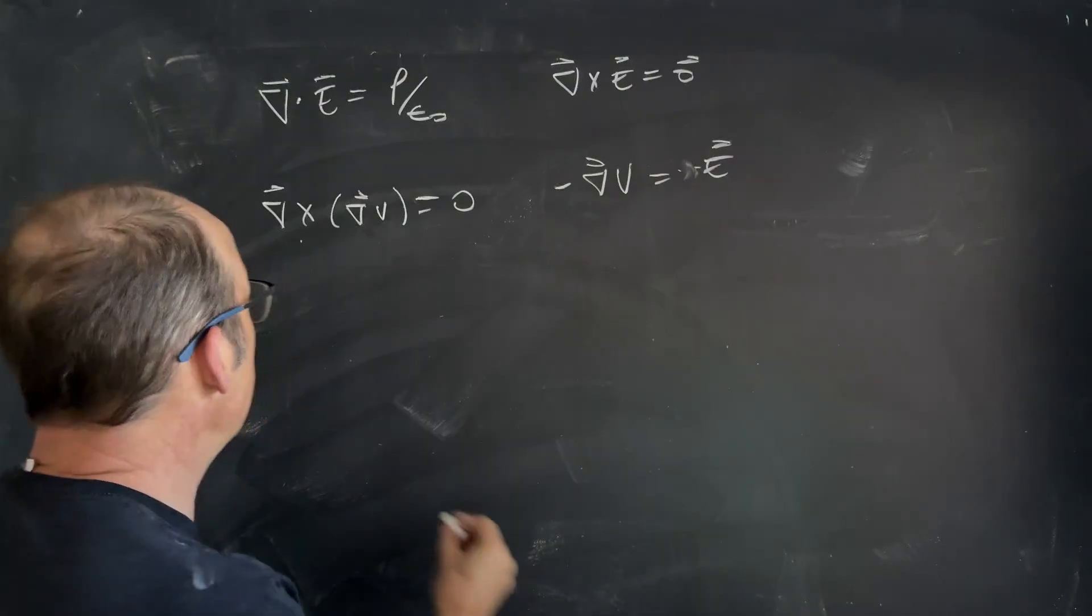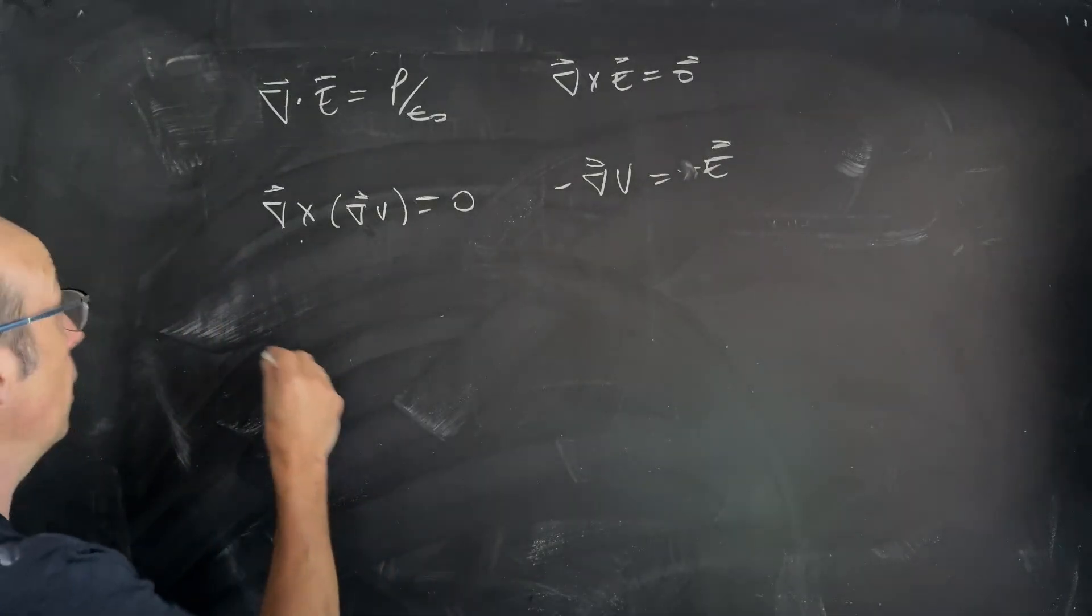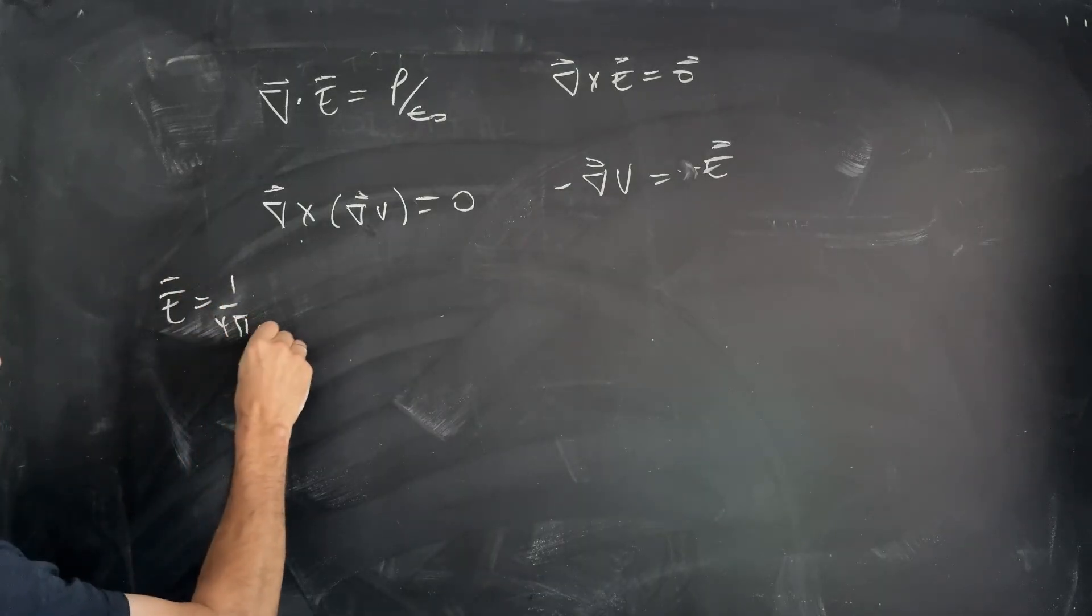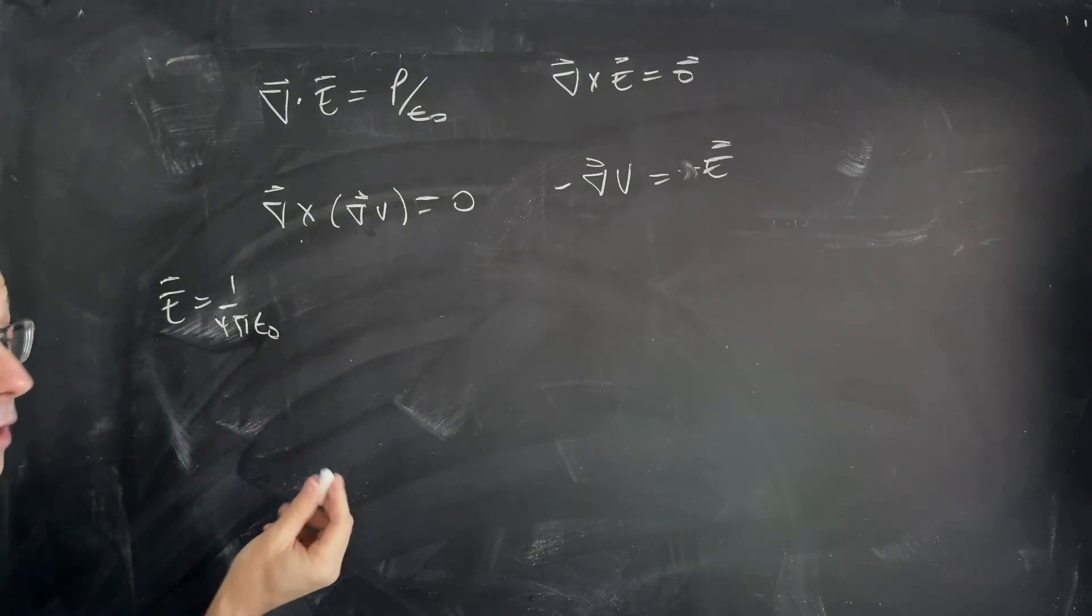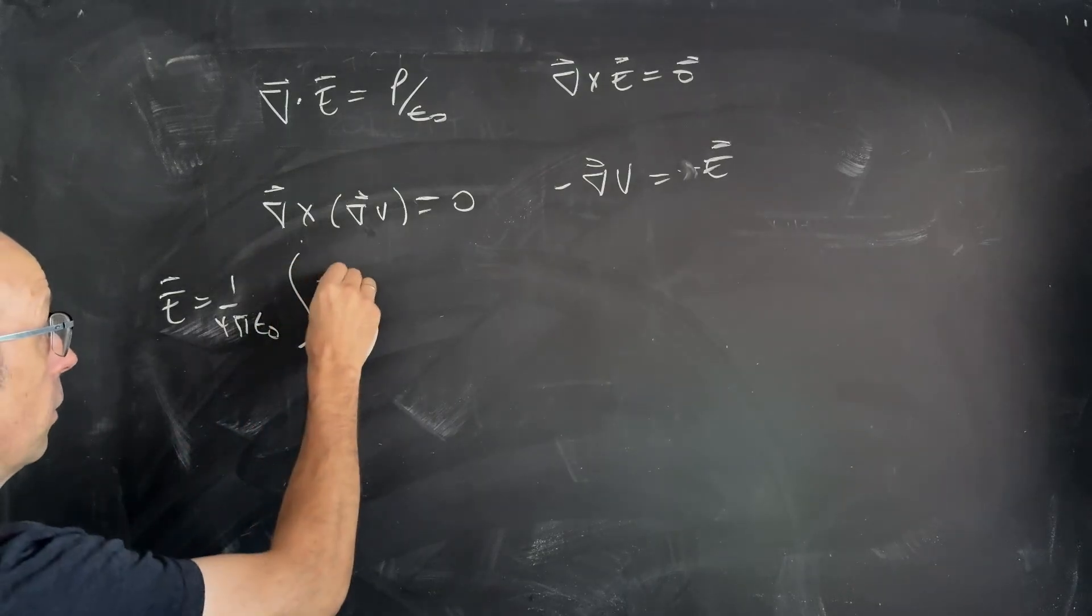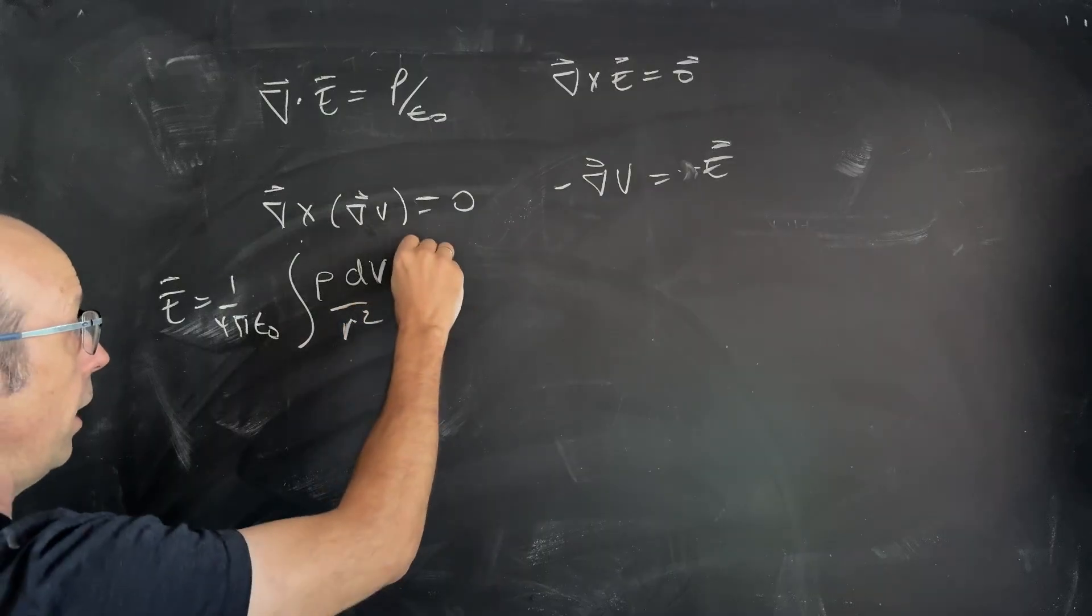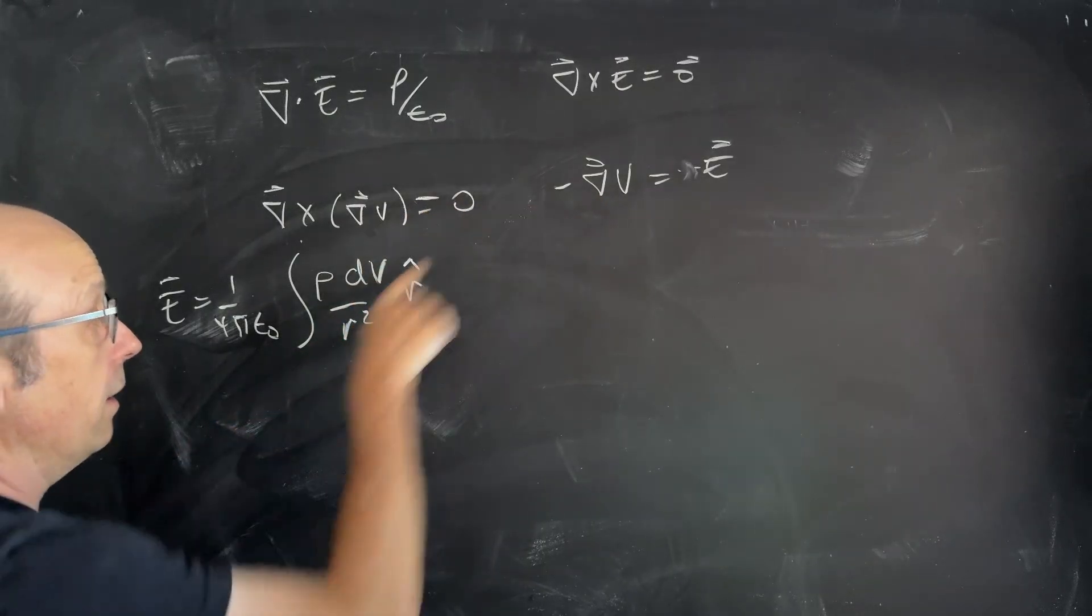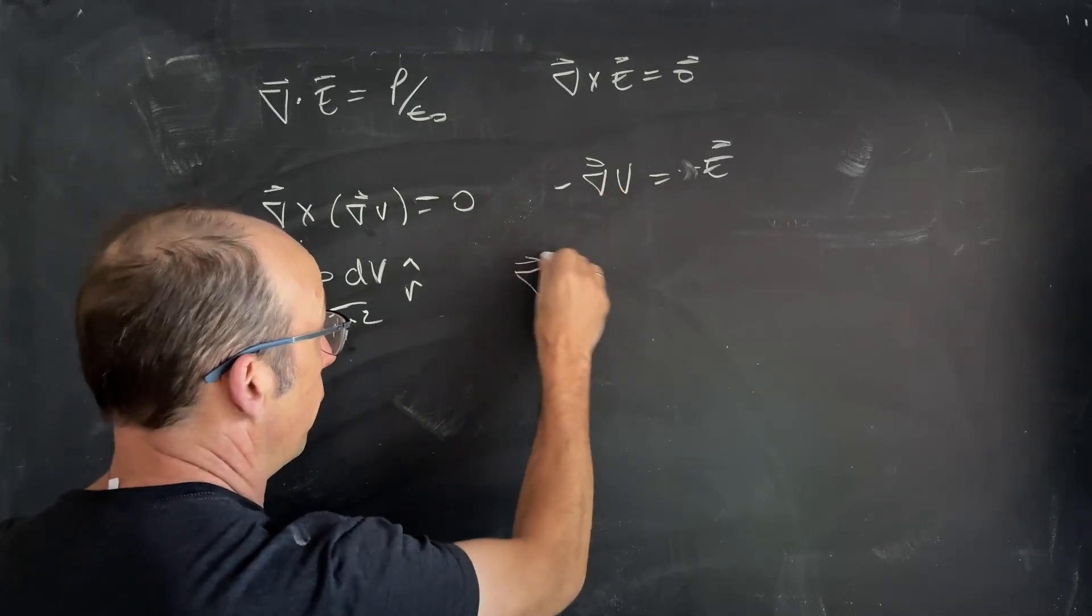Now, let's say that I have, remember, I know the electric field. I erased it already. E, one over four pi epsilon naught. I'm going to write it in differential form. Rho DV over R squared R hat. I know that. I also know I can write this is in spherical coordinates.